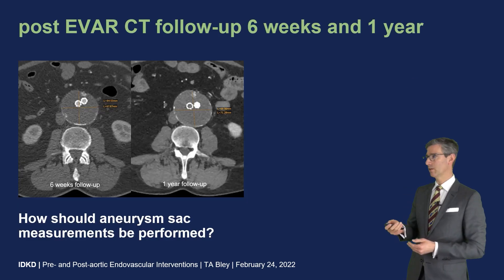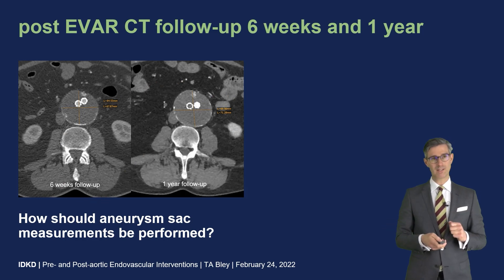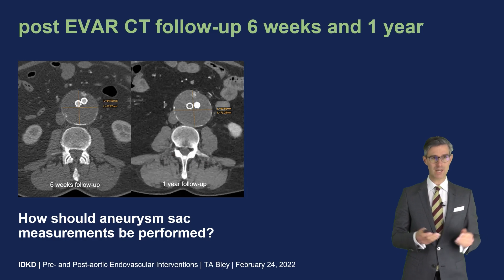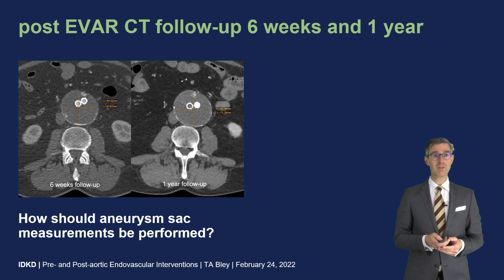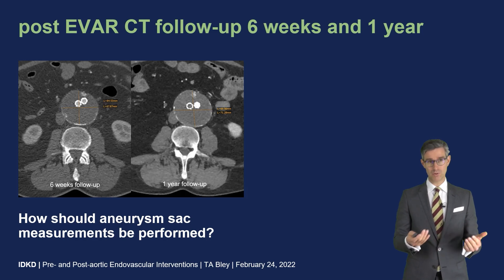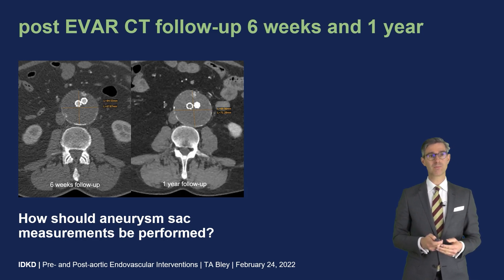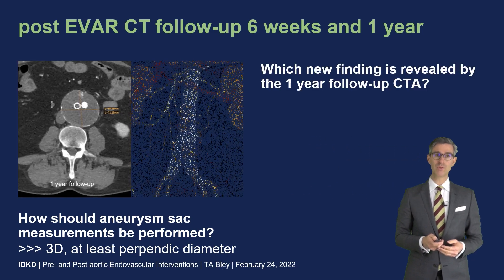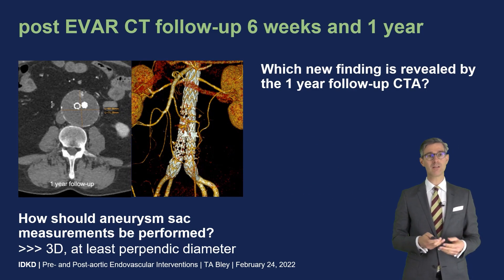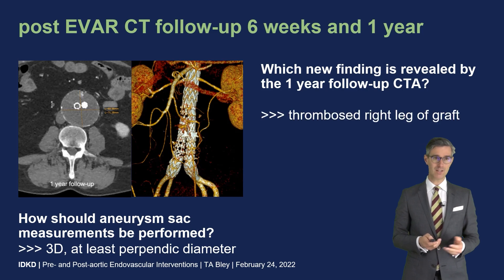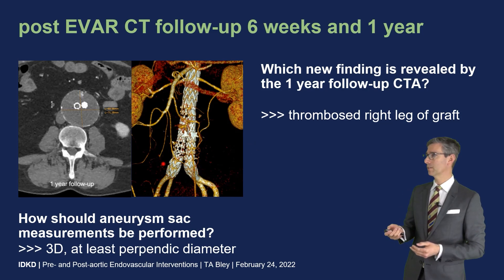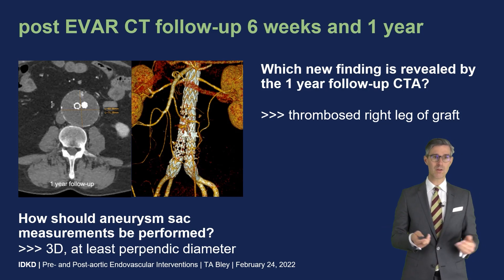Back to our case: we already saw the six-week follow-up scan, and now the one-year follow-up scan reveals one more finding. How do we measure the aneurysm sac? Ideally it would be a 3D volumetric analysis; however, in my department due to high volume we perform perpendicular diameter measurements to assess volume increase. There is also a new finding visible on the 3D VRT image: thrombosis of the right leg of the graft. You can virtually look through the stent graft because there is no contrast in the right leg — only thrombosis.